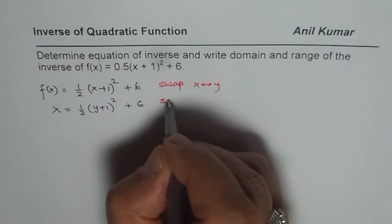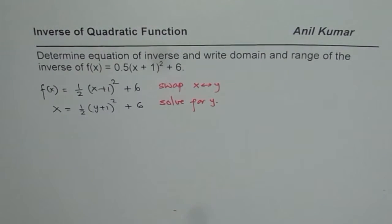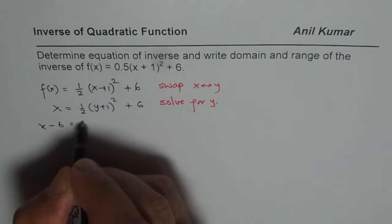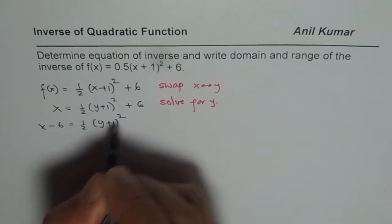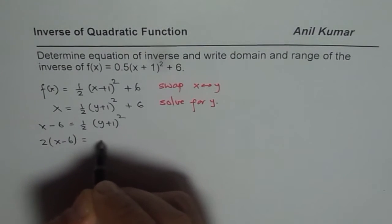And then we have to solve for y. So these are the steps to be followed. To solve for y we will take away 6. We get x - 6 equals to 1/2(y + 1)². Now multiply by 2. 2(x - 6) equals to (y + 1)².